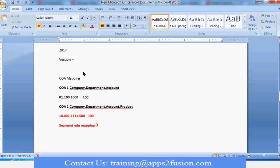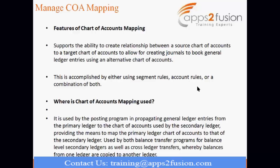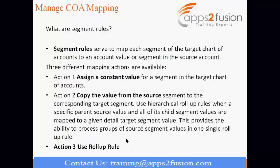Segment rule mapping allows you to create a relationship between a source chart of account and a target chart of account. This is accomplished either by segment rules, account rules, or a combination of both. Chart of account mapping is used for posting ledger entries from your primary chart of accounts to your secondary ledger chart of accounts. You can have different types of segment rules: assign a constant value, copy value from source, or use a rollup rule.